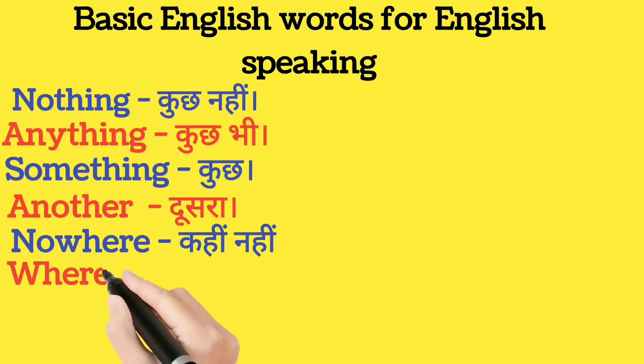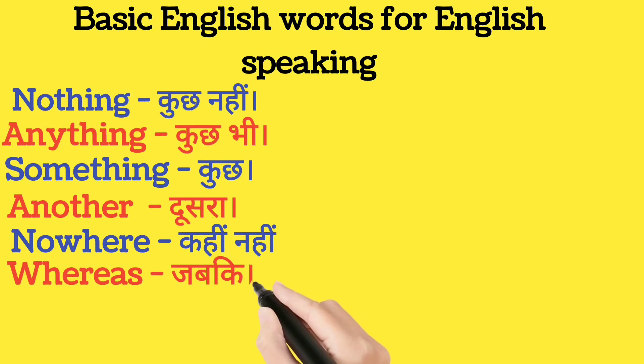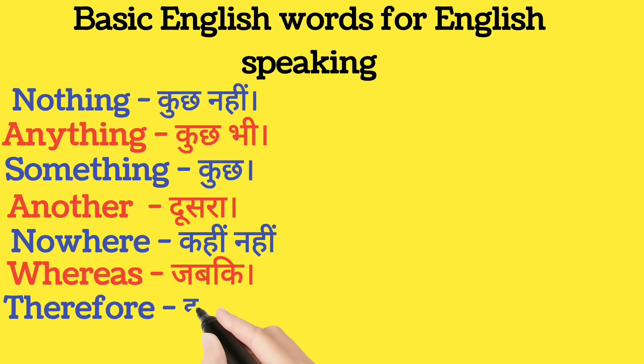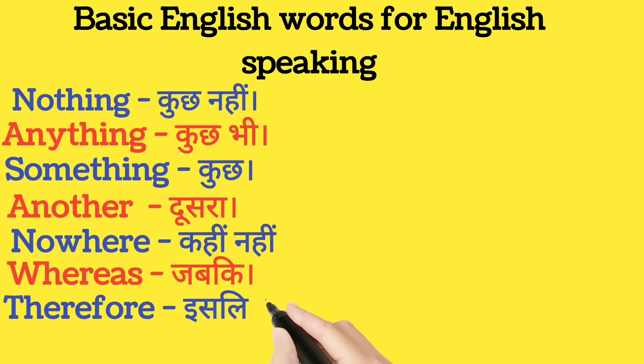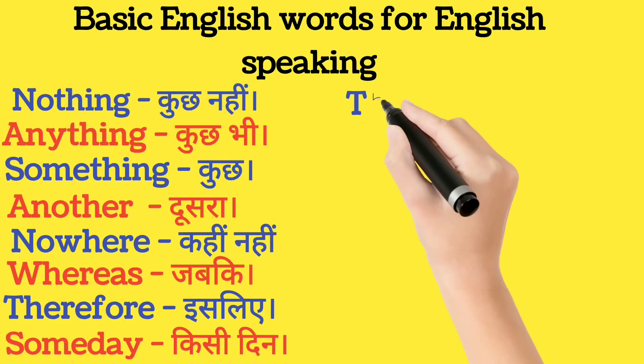Next hai 'nowhere'. Nowhere ka matlab hota hai kahi nahi. Whereas — whereas ka matlab hota hai jab ki. Fir 'therefore' — therefore ka matlab hota hai is liye.